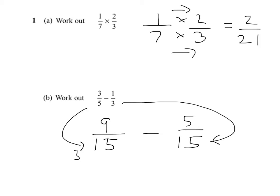Now the denominator is the same, I can simply do nine take five, gives me four, the denominator remains the same, so the answer is four-fifteenths.